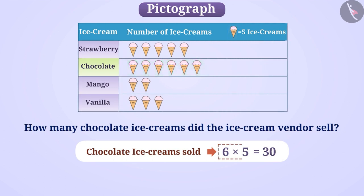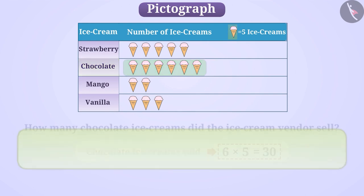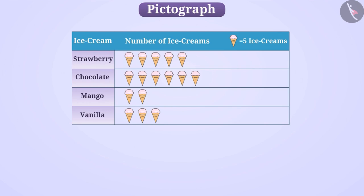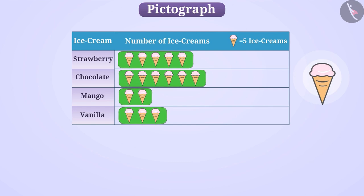This table helps us understand the data just by looking at it. Numbers are not represented in this table, but still, just by looking at the table, we can easily find the answer to number-related questions. A table in which data is represented in the form of images, objects or parts of objects is called a pictograph. In any pictograph, similar images are used to represent the data, and we are also given the value of an image using which we can understand the table.